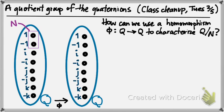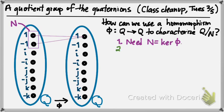And we were kind of struggling. So here's where we were at at the end of class. We knew that we wanted this homomorphism to kill +1 and -1 — we need the kernel to be exactly those two elements. But once we started trying to define what this homomorphism did to the other elements, we ran into some trouble.